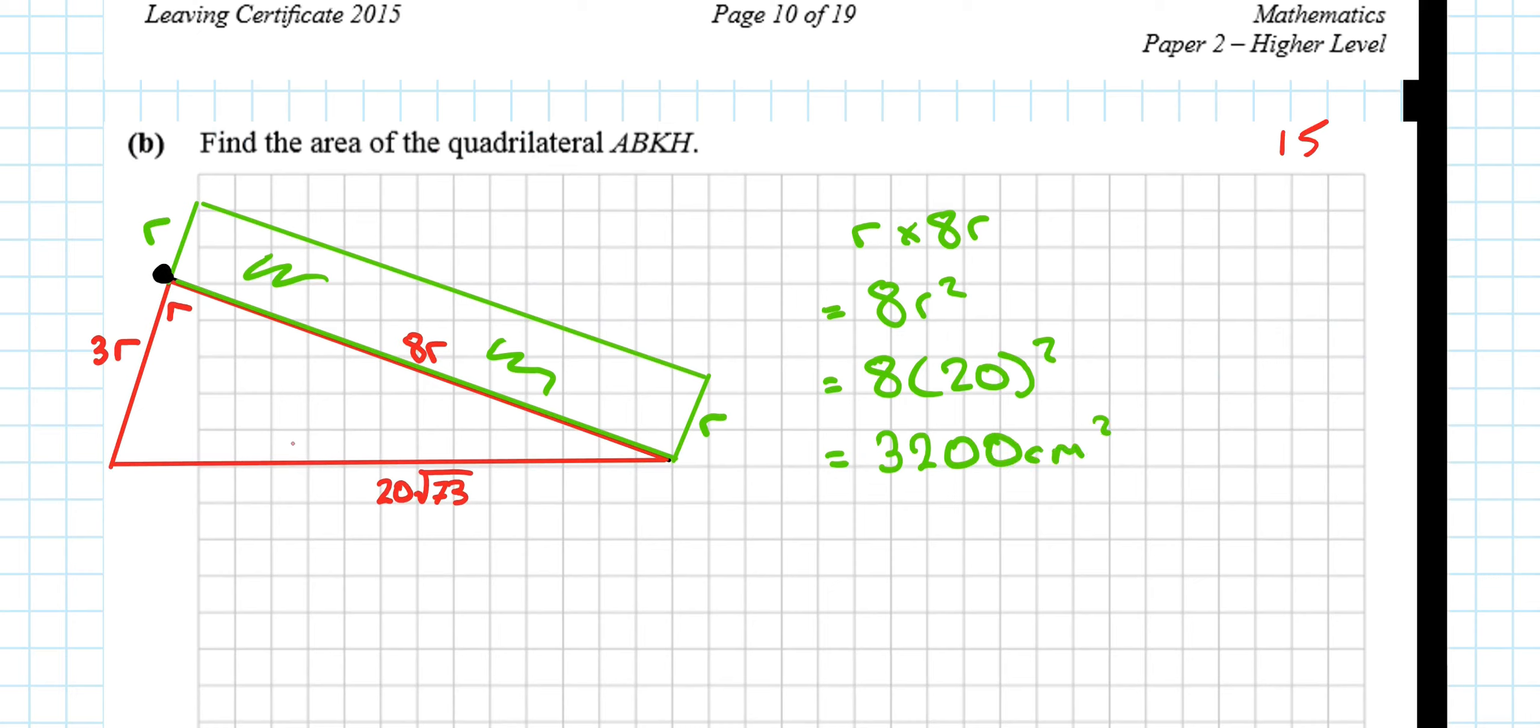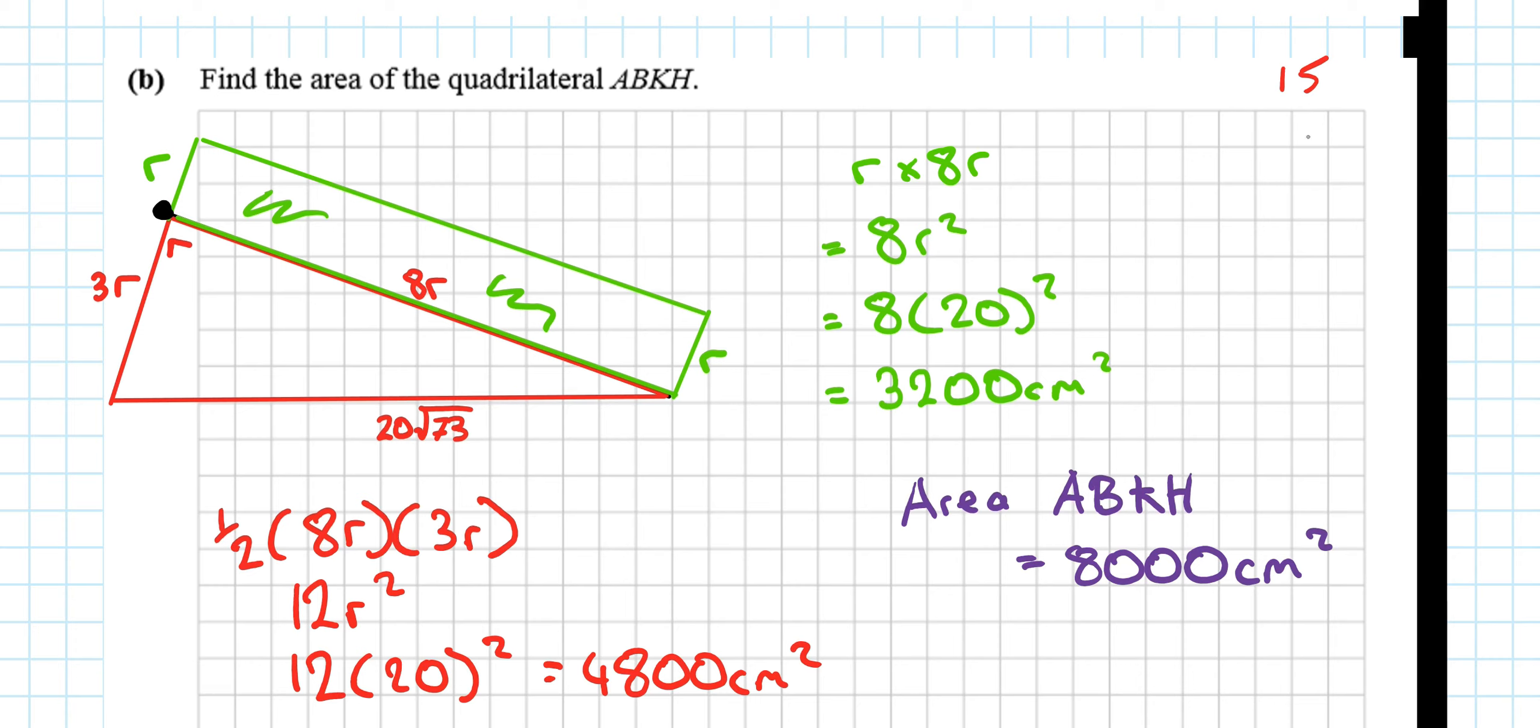So the total area of ABKH is equal to the two of them added together, which is 8,000 centimeters squared. Okay, another 15 marks going for that. So again, loads of marks really quickly, really easily. 30 marks already.